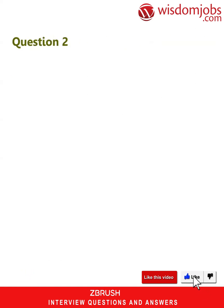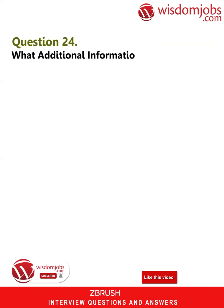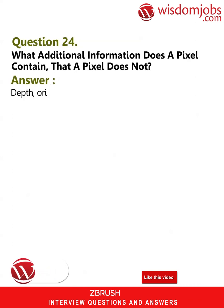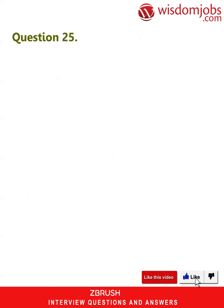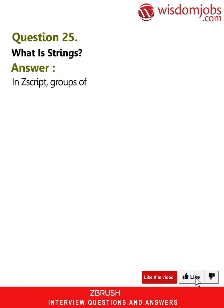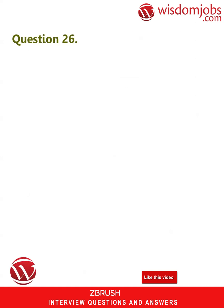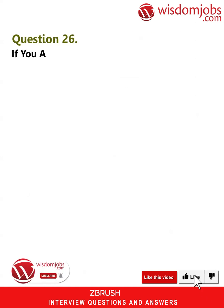Question 24: What additional information does a pixol contain that a pixel does not? Answer: Depth, orientation, and material. Question 25: What are strings? Answer: In ZScript, groups of characters are called strings.